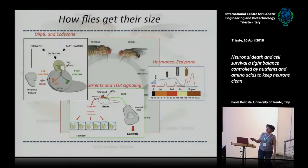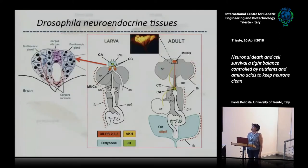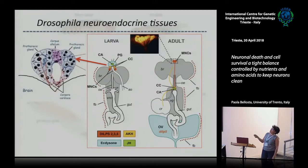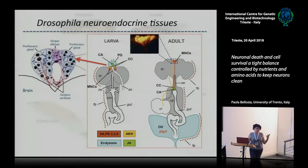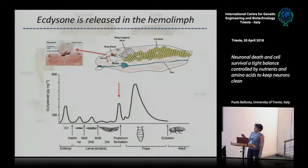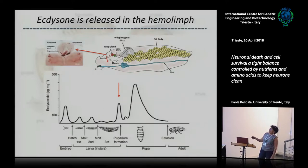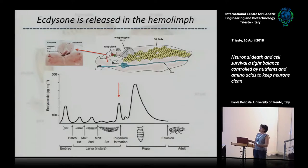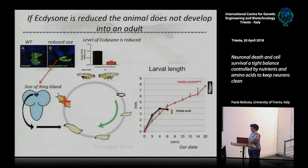I find this very fascinating. Briefly, the ring gland is between the two lobes in the larva and is also present in the adult, though the function of ecdysone in the adult is less well known. During development we have these molts, and then ecdysone, which is released from the prothoracic glands, goes into the hemolymph and controls the peaks of development.